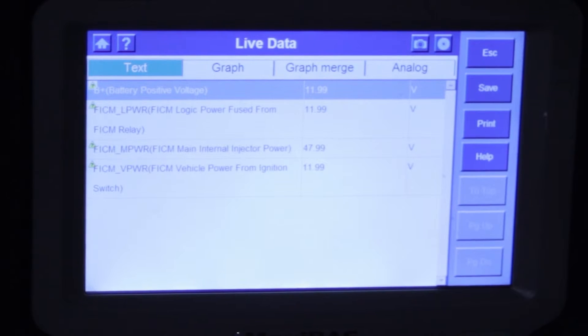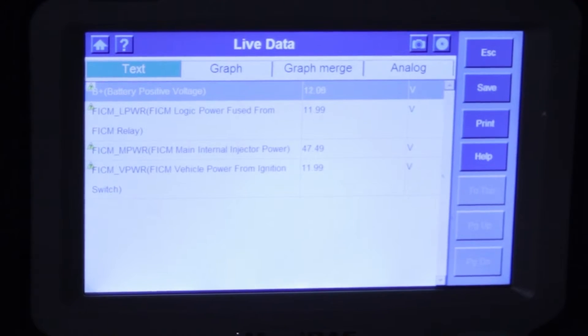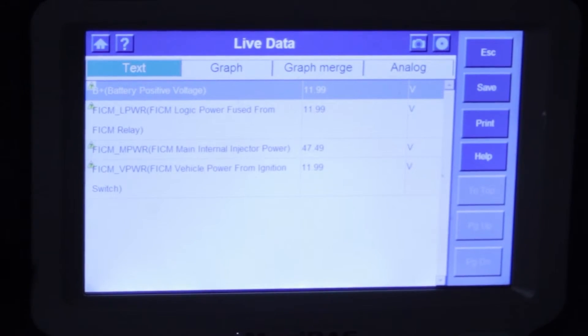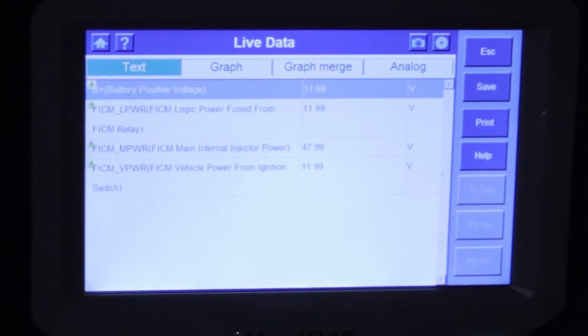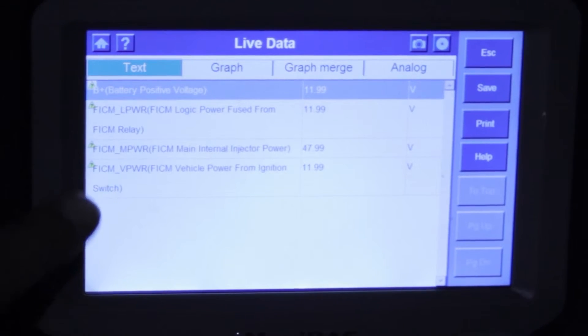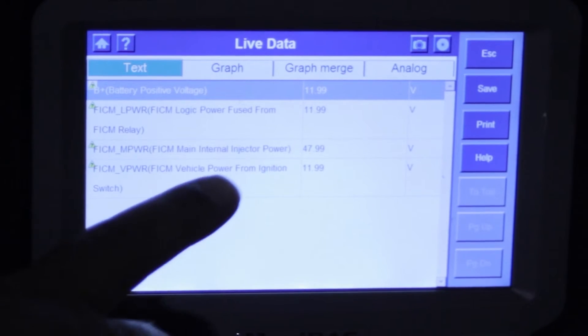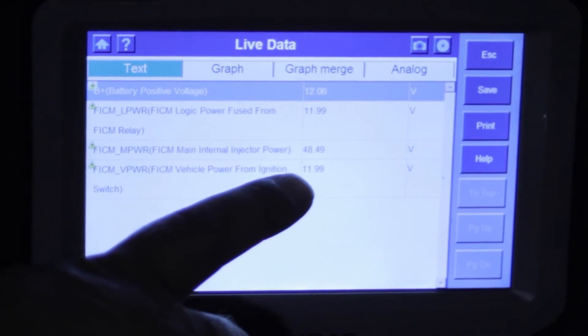Now we've gone ahead and installed the FICM in the truck. Now I'm key on engine off and we're just in the scan data here looking at a couple of our voltages. First you'll see like the B plus voltage or the power going into the FICM should be pretty close to battery positive so we're at 11.99 volts.